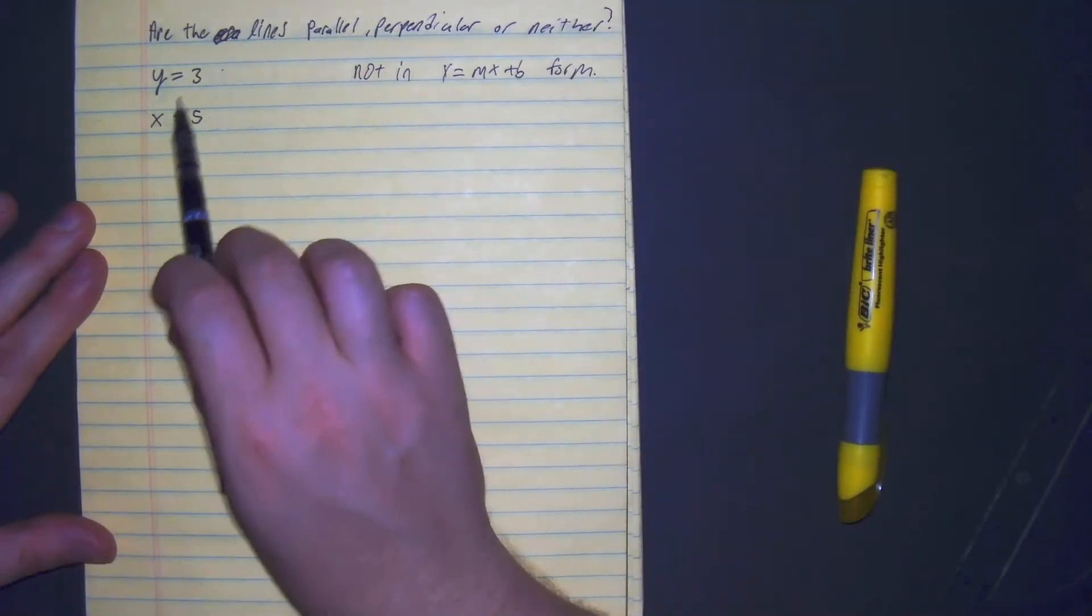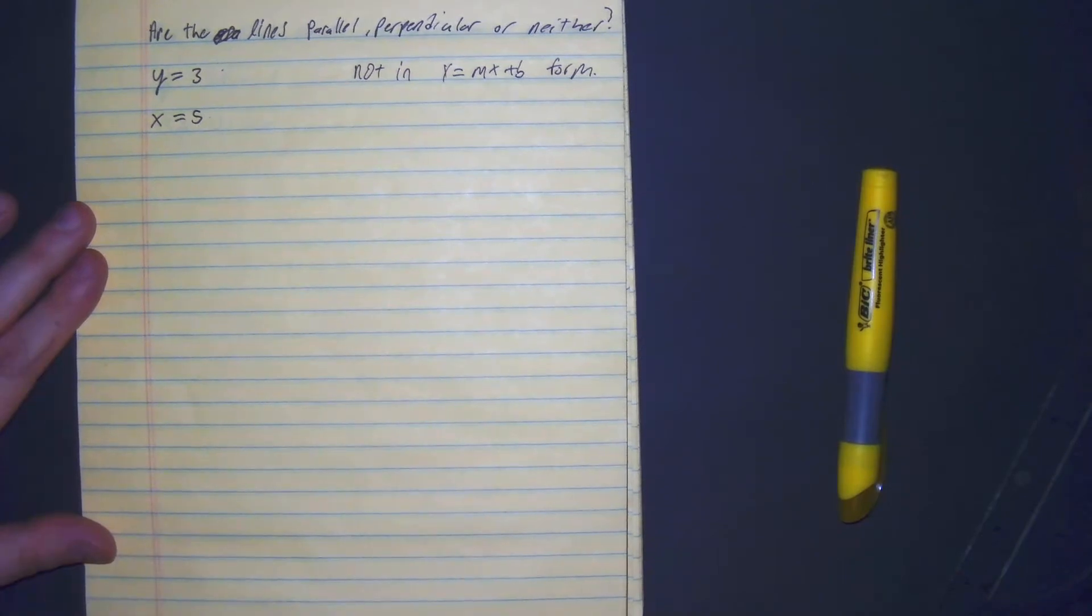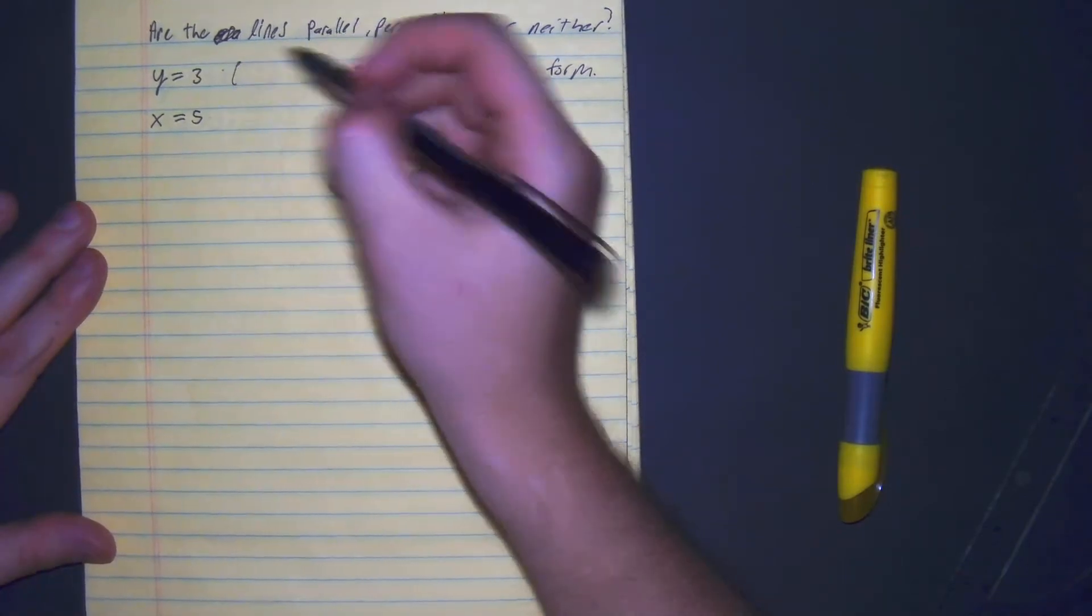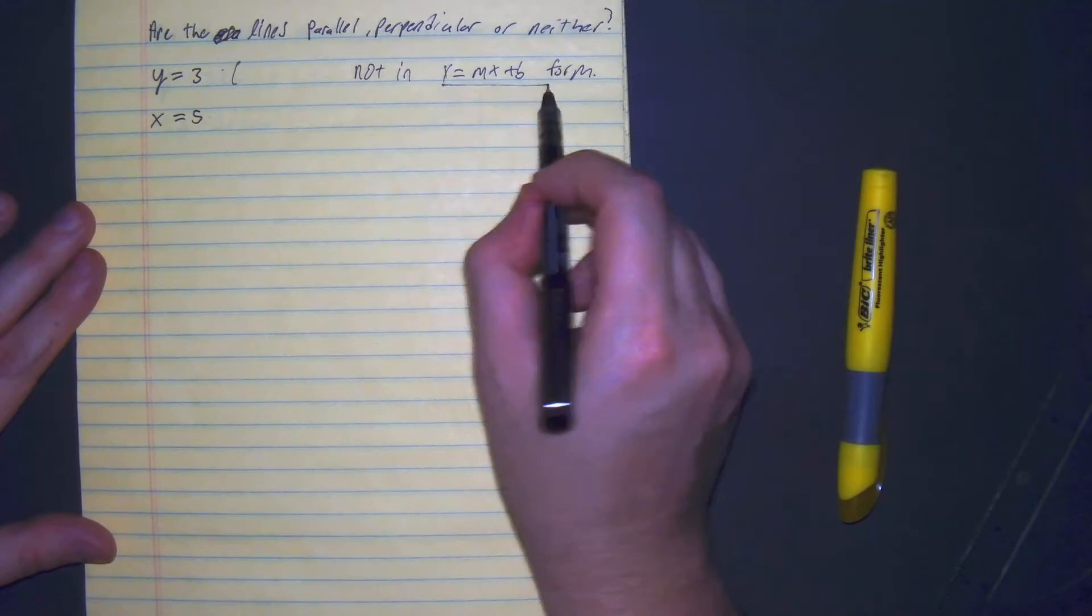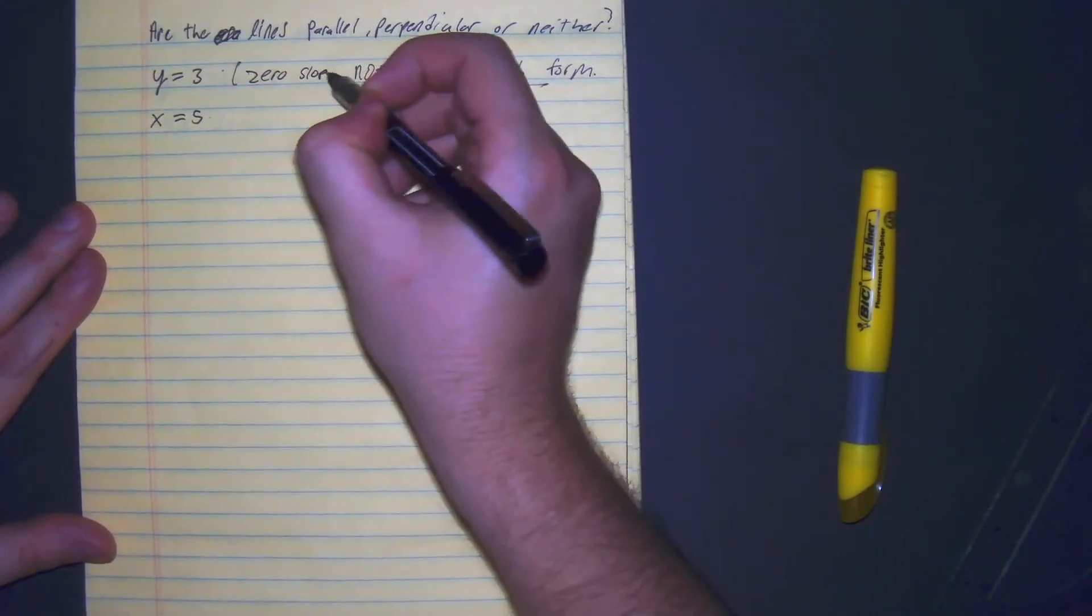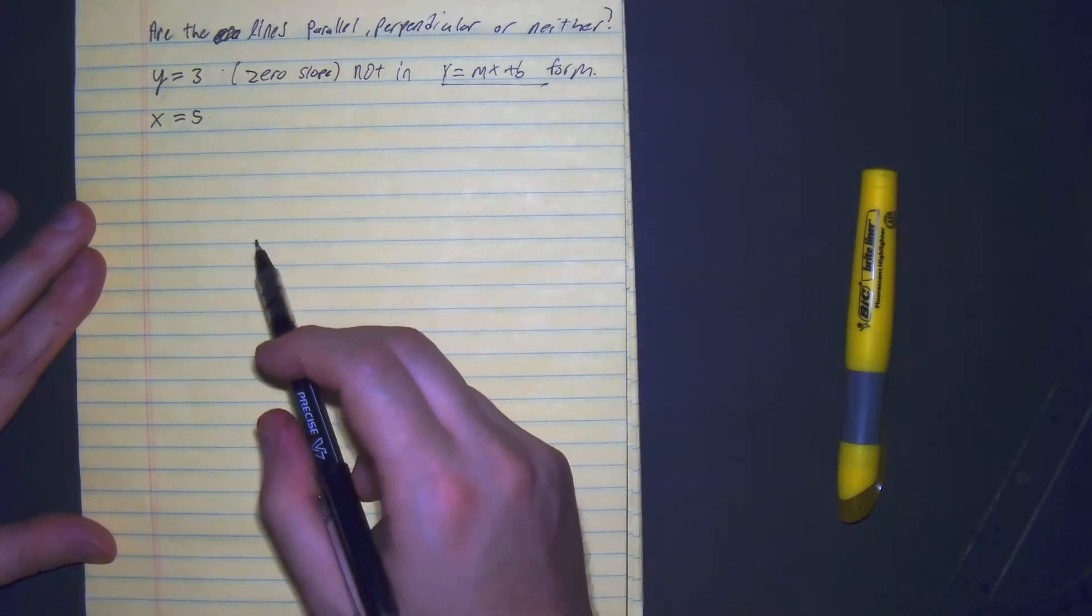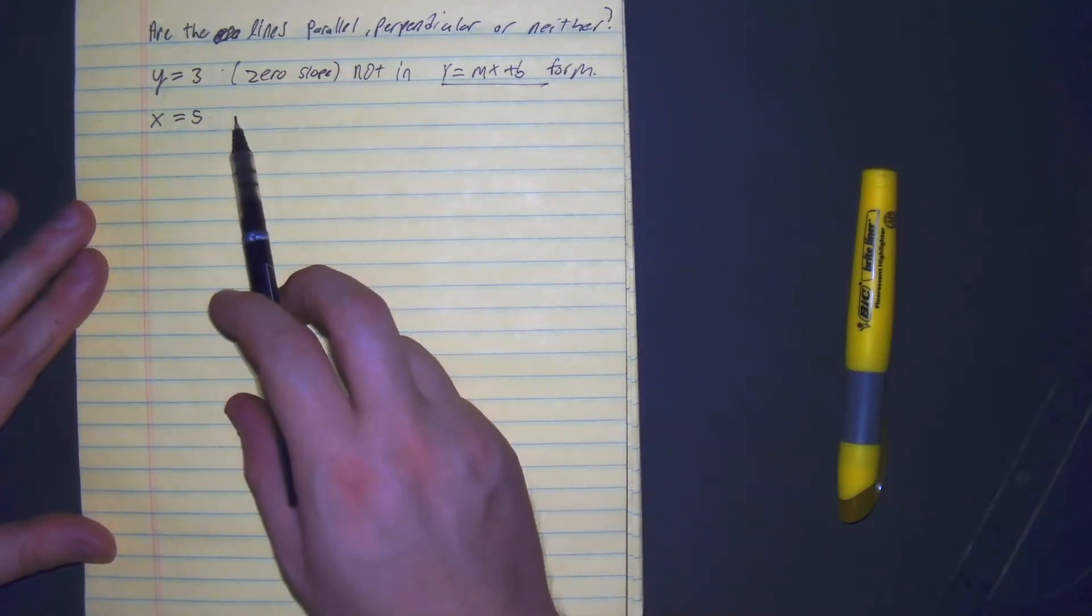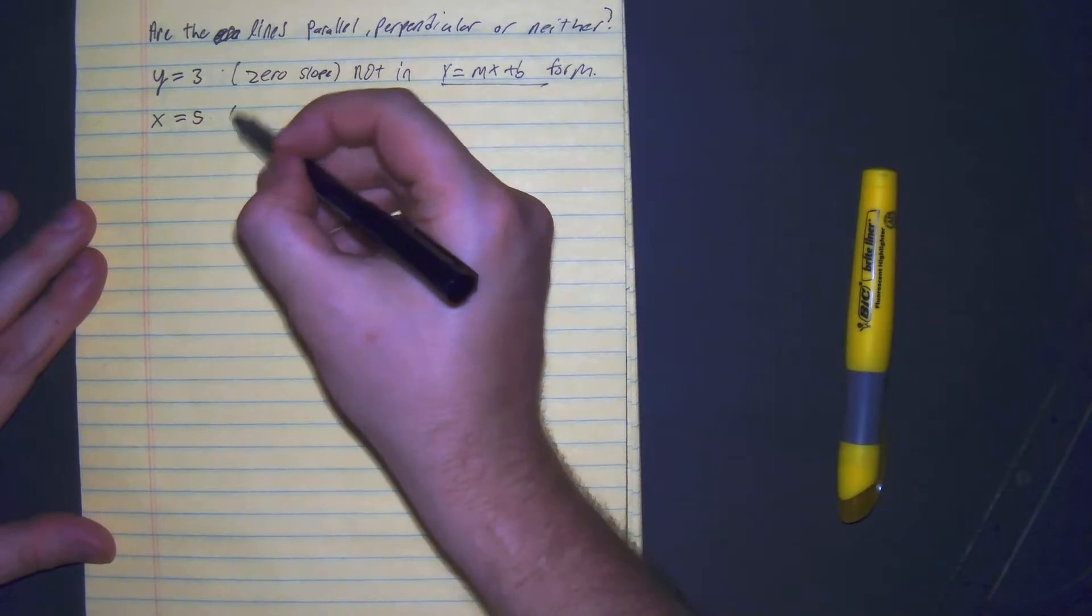So y equals 3, x equals 5. This right away I can see has zero slope. And this right here, if I were to move the 5 over, it's undefined slope.